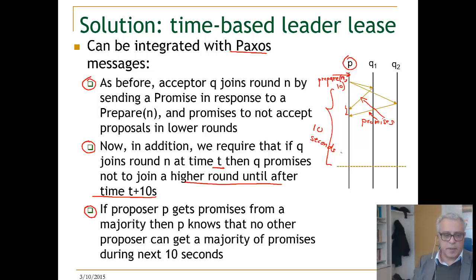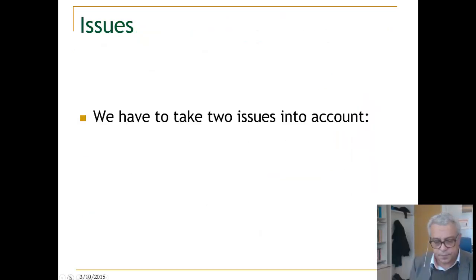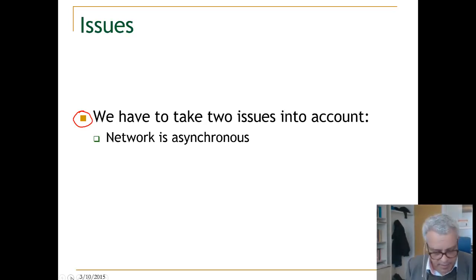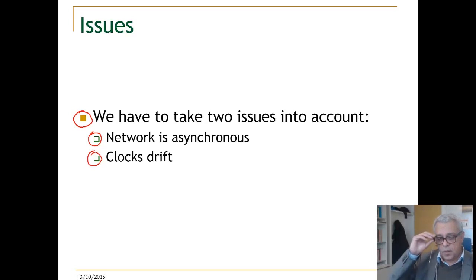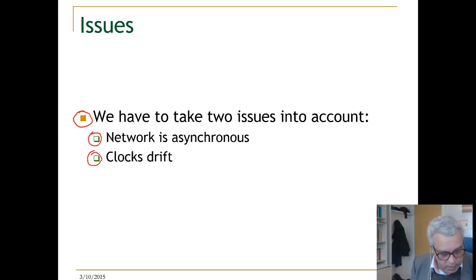This is a basic idea, but we have to be careful about how to implement it correctly. There are two issues to take into account. First, our network is asynchronous — we don't know how long it takes for a proposer to communicate with replicas or acceptors. Second, there is what is known as clock drift: clocks in different machines may run at different speeds. We will address clock drift in the next unit; for now, let us focus on the asynchronicity of the network.